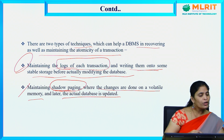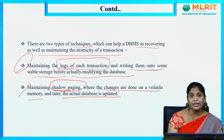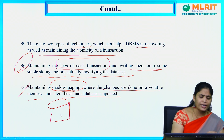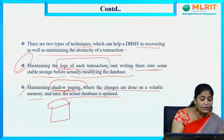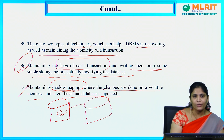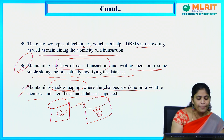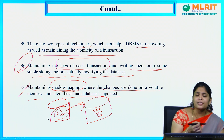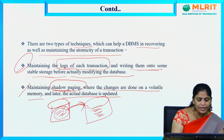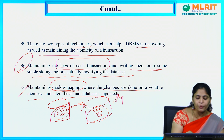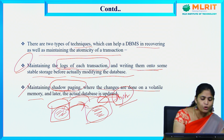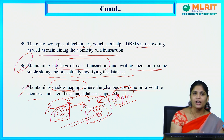In the shadow copying technique, the old data is retained. If we want to update data in the database, we first copy all the data into a new location. We then perform all updates there. If the updates are successful, a database pointer is moved to point to the new database. Otherwise, it is rolled back to the old database. This is the shadow copying technique discussed in our previous sessions.